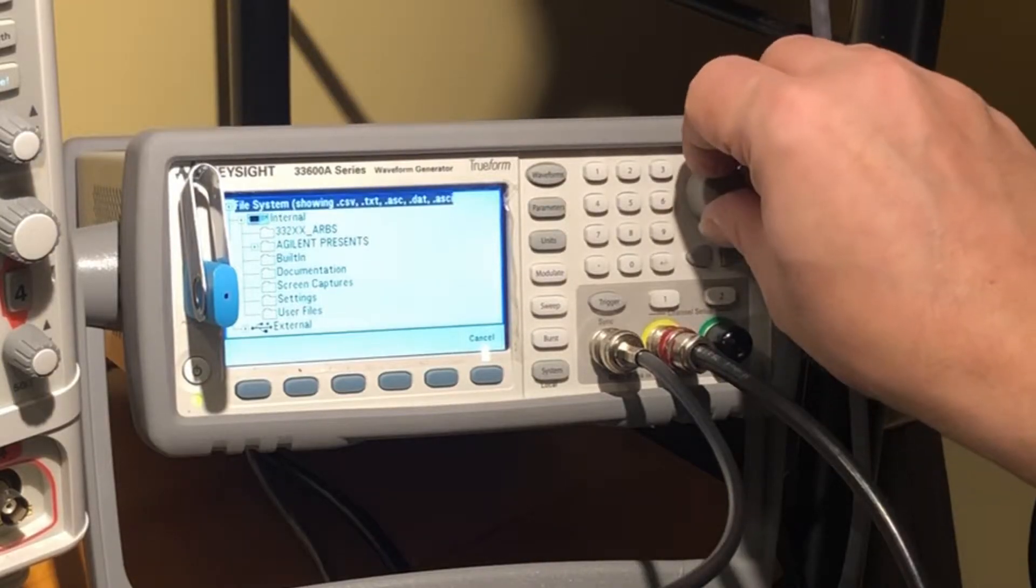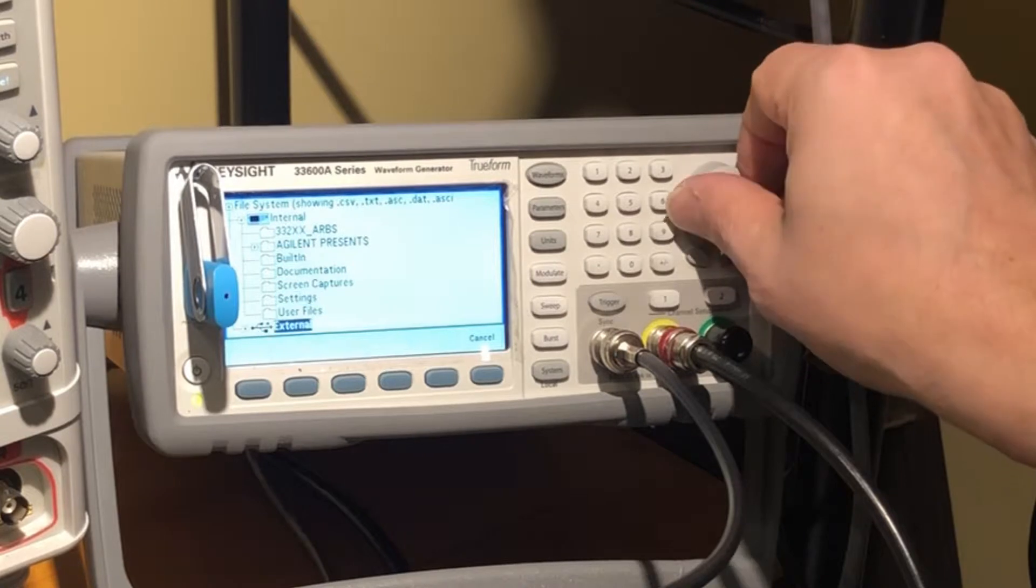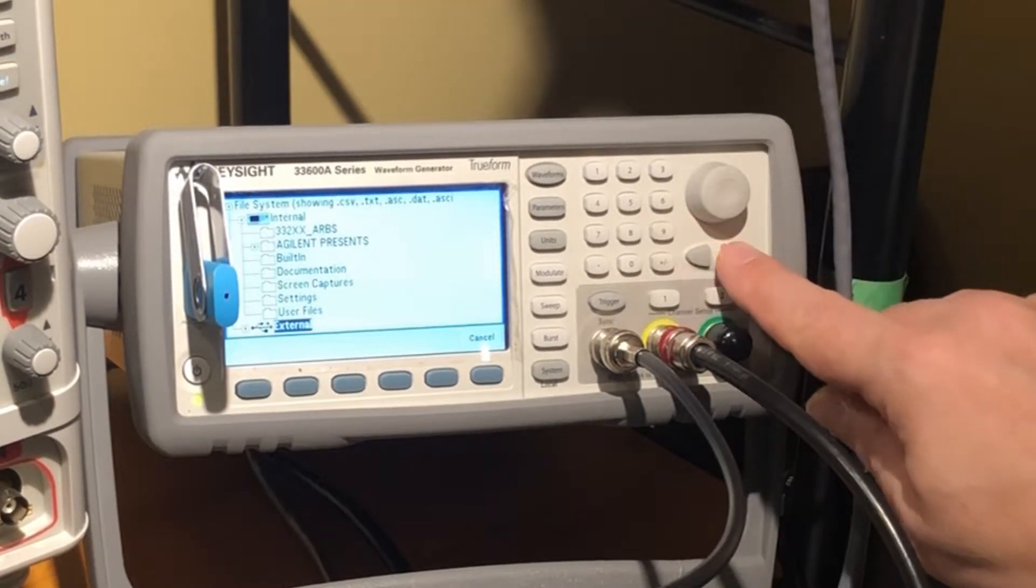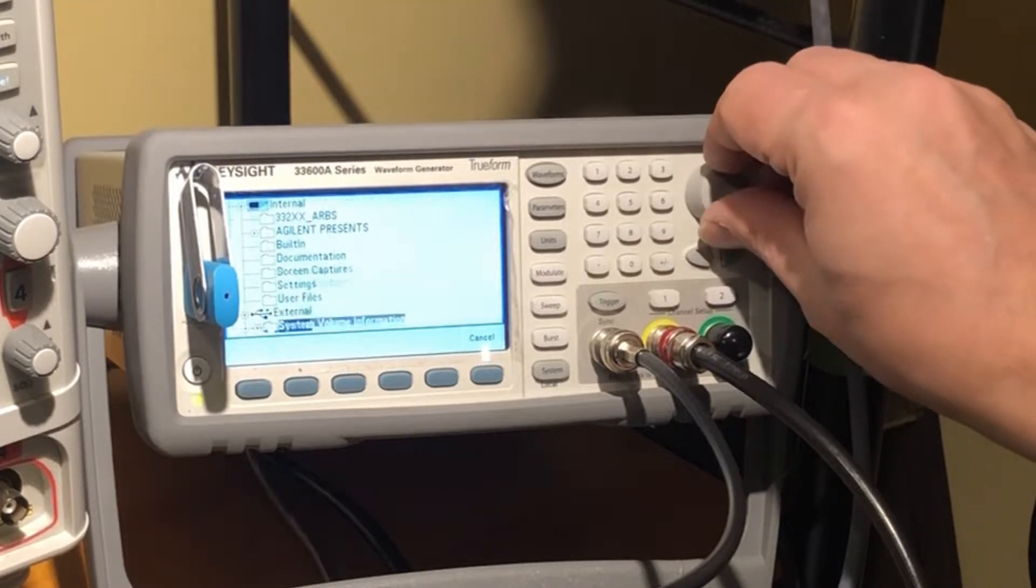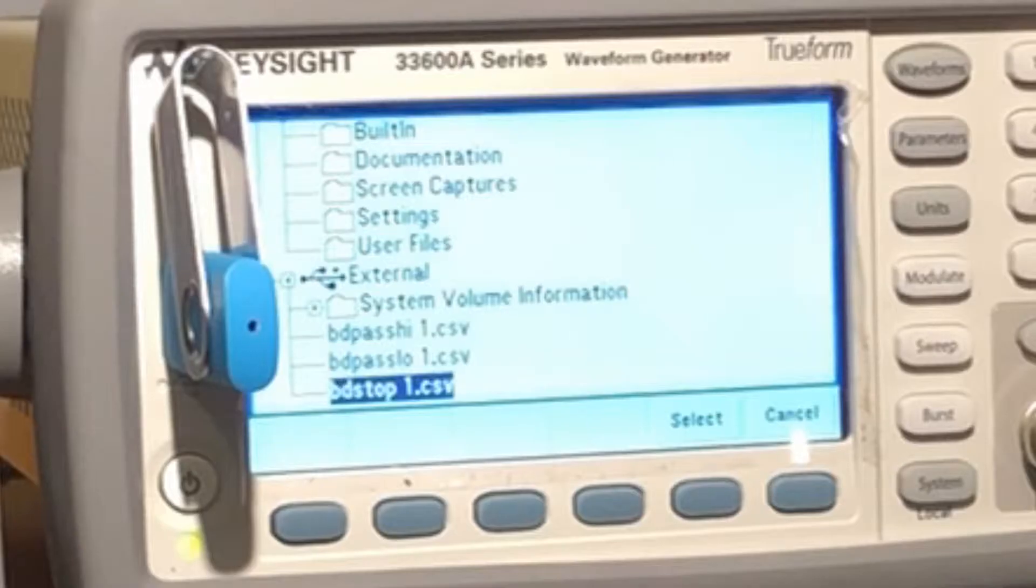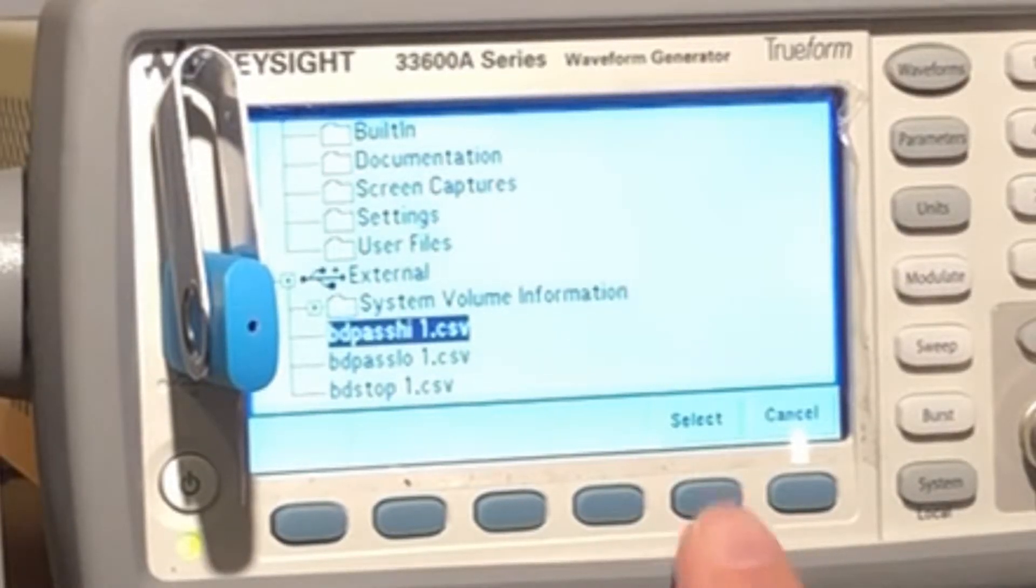And then we're going to dial down to external. Now we don't see everything listed here so I'm just going to press one of these keys here. Now we see I have a couple of choices so I'm going to select this import.